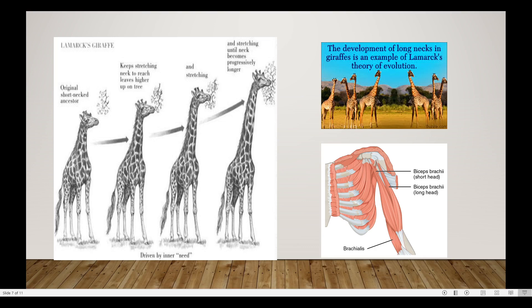The long-necked giraffe is one of the best examples of Lamarck's theory of evolution. The diagram here shows the biceps — the short head and long head — and the muscles development and muscles increase.